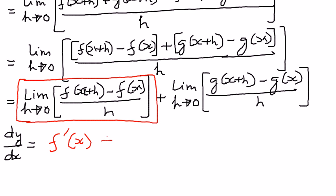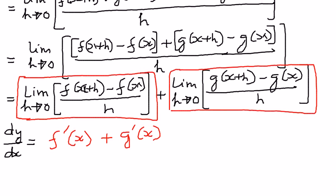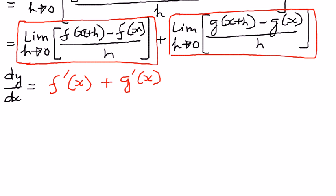Plus this part here — limit of g of x plus h minus g of x divided by h, as h approaches zero. This part of the equation is the first derivative of the second function, g of x. Therefore, by looking at this, we can see that the derivative of the sum of functions is the sum of the derivatives.